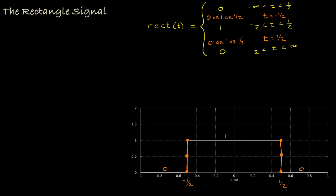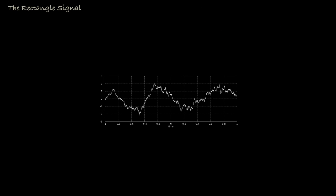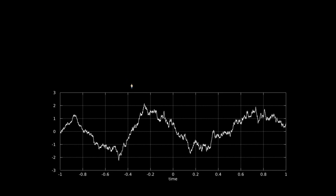Now let's see how the rectangle function is used as a window to isolate a specific region of a signal. Suppose we're only interested in the region of this signal between plus and minus one-half seconds.